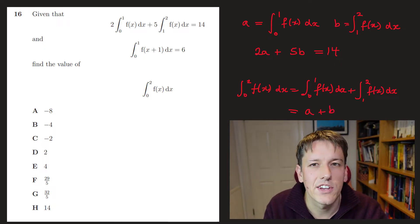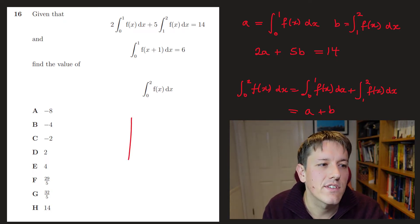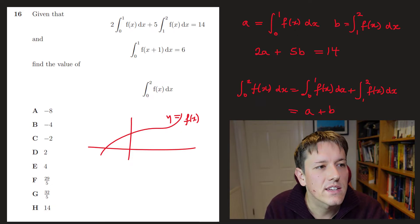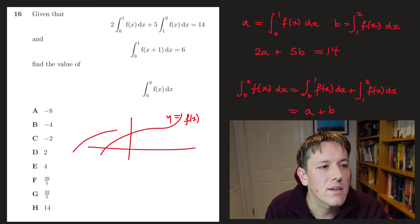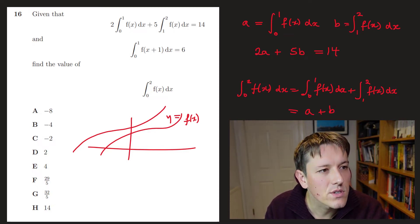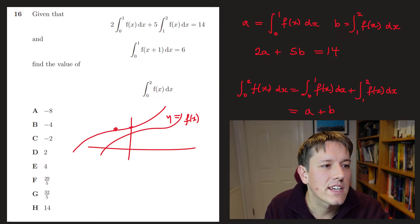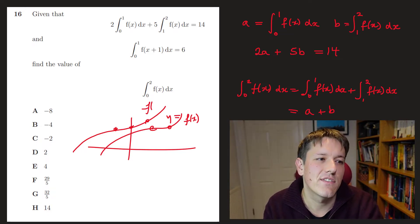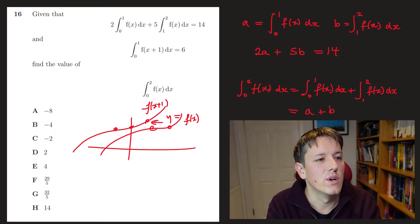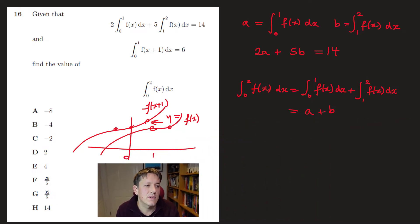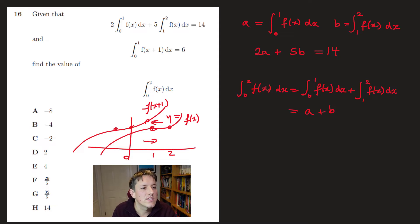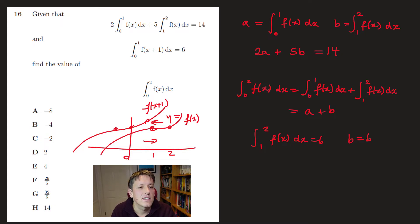The last piece of information is the integral from 0 to 1 of f(x+1) dx. If you have the graph y = f(x), then f(x+1) is that same curve shifted to the left by one unit. So integrating f(x+1) from 0 to 1 is just the same as integrating f(x) from 1 to 2. That tells us b = 6.